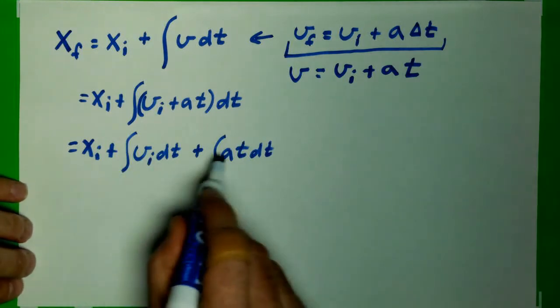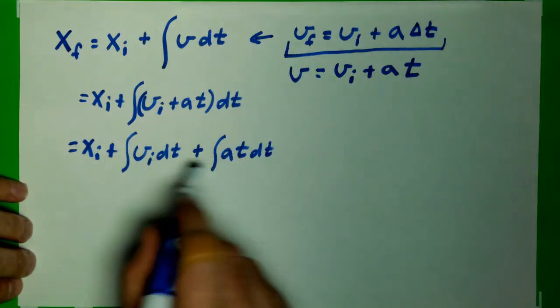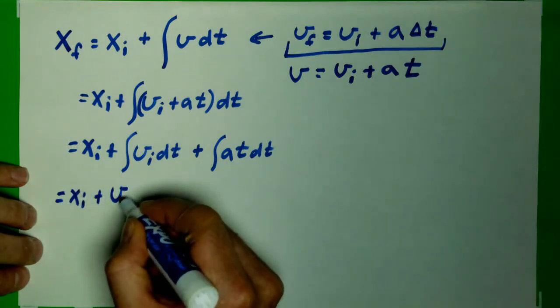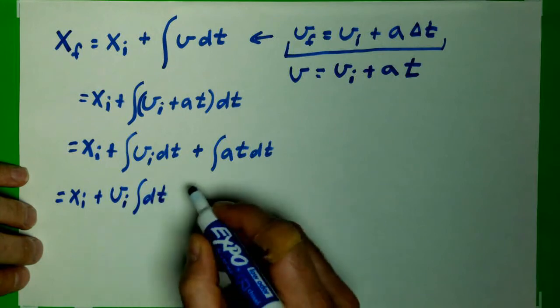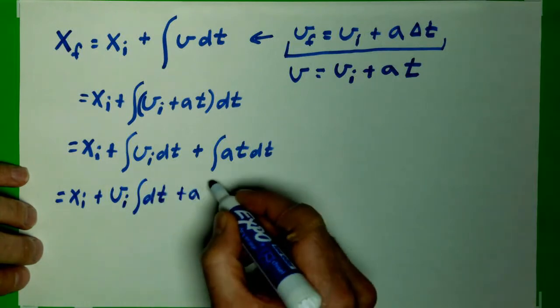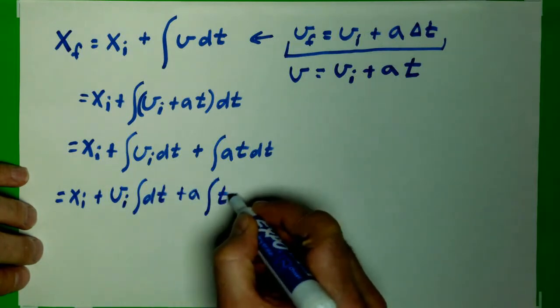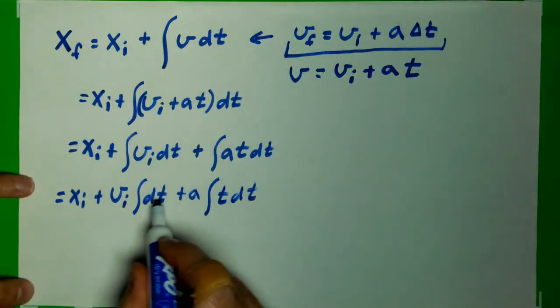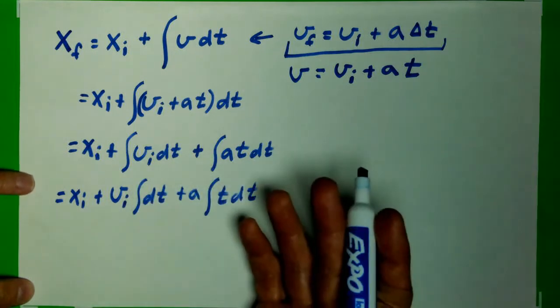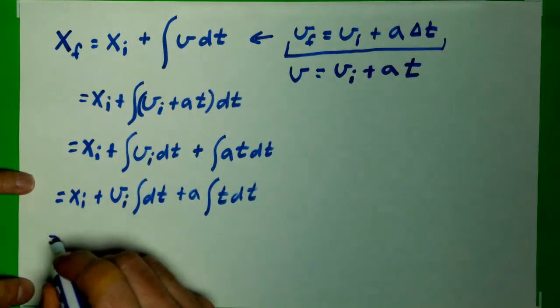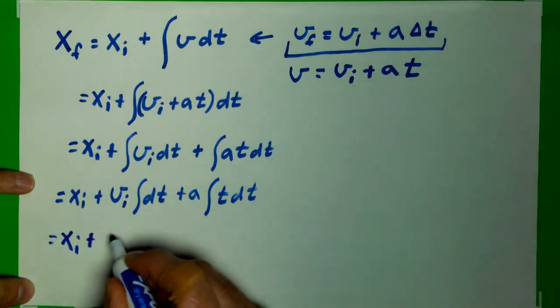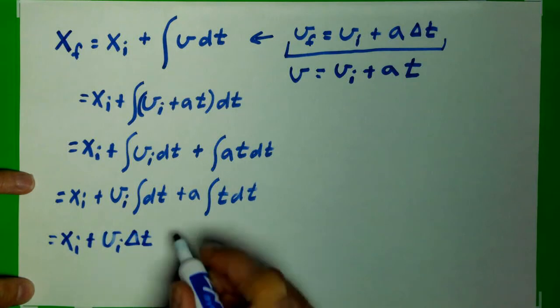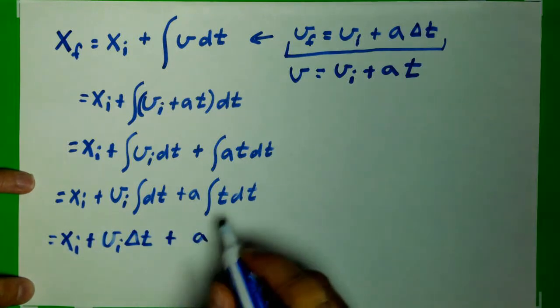Just like in derivatives, constants aren't acted on, so we can pull those out. So we have xi plus vi, integral of just dt, plus a, and the integral of t dt. Well, the integral over dt, from some initial time to some final time, is just a change in total time. So that becomes x initial plus v initial, I'm going to put delta t there, plus a.